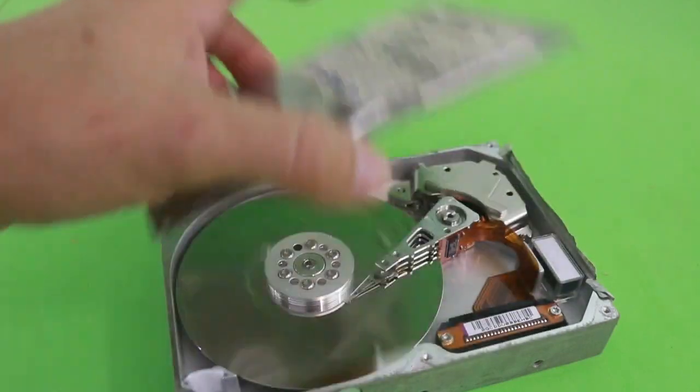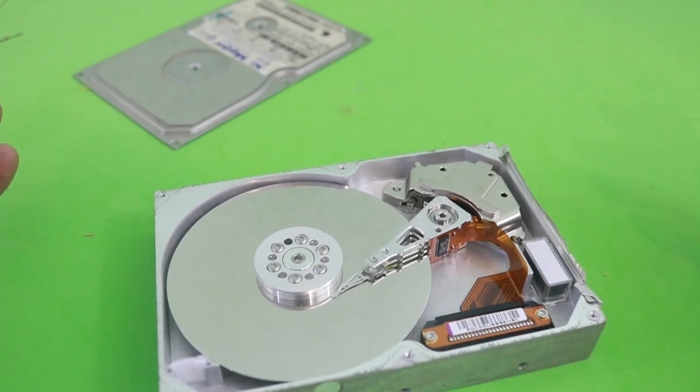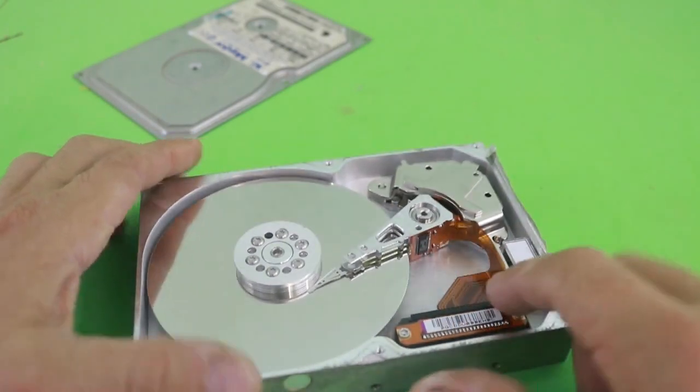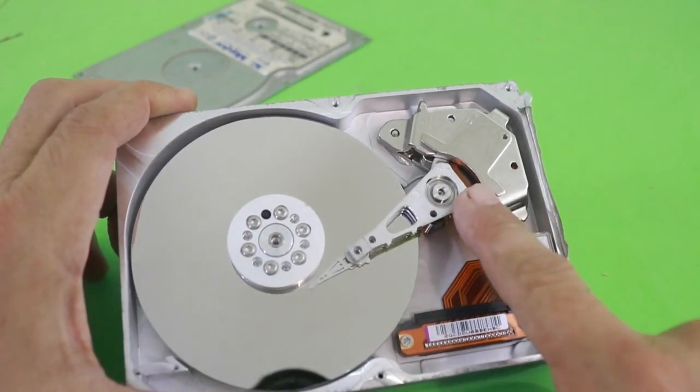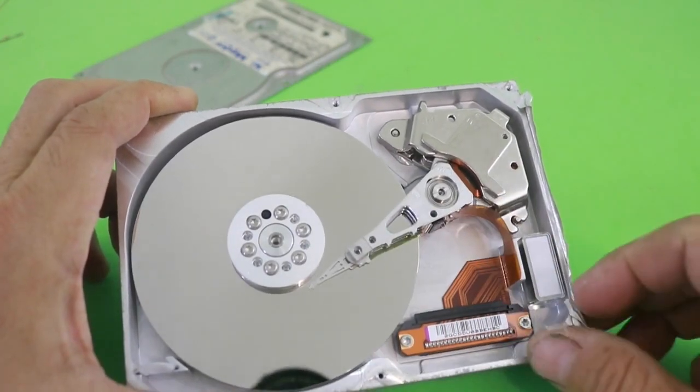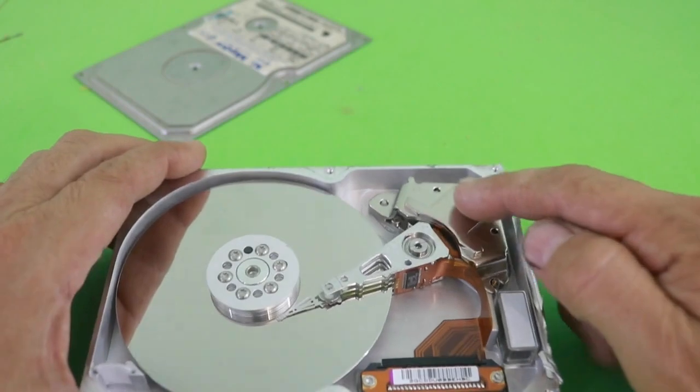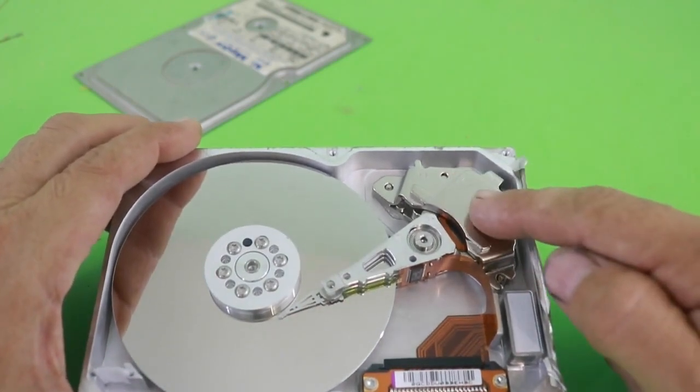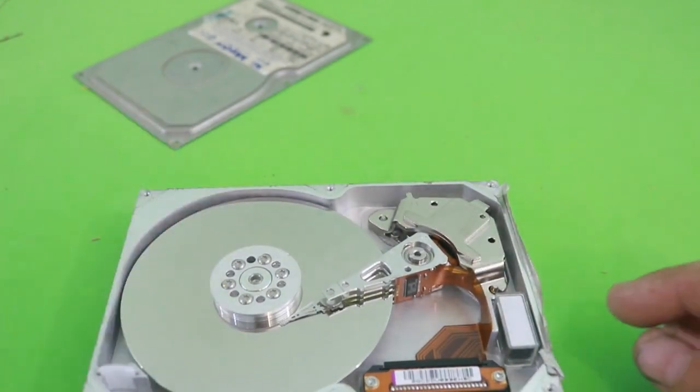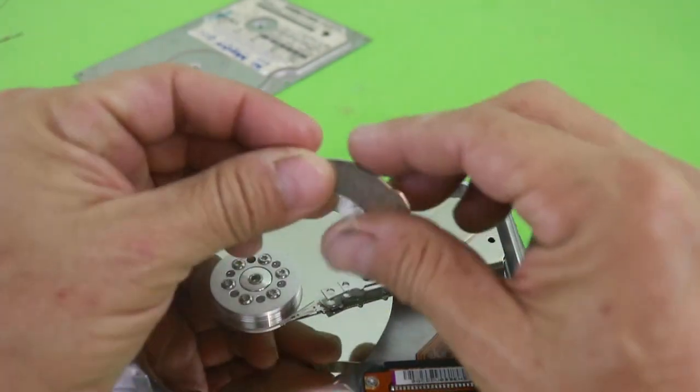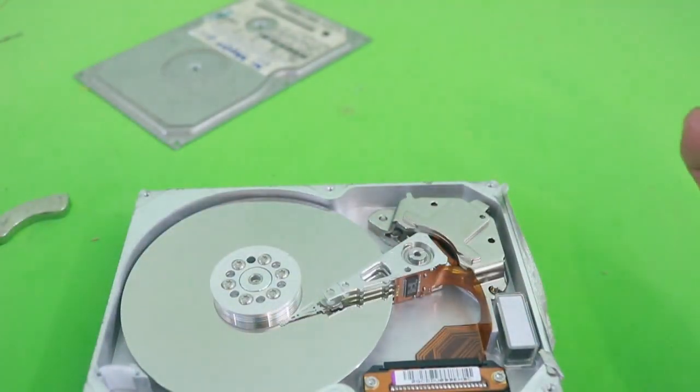When you open a hard drive you can find several components that are useful to make different projects. Here is the arm that I am using which has the coil, and also many people use the neodymium magnets that are here around the coil. You need to remove a couple of screws to take this piece off in order to get the magnets, and they are very powerful.